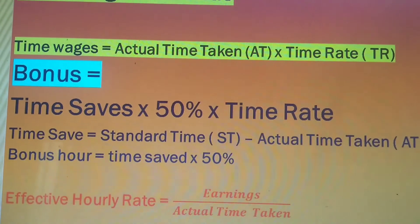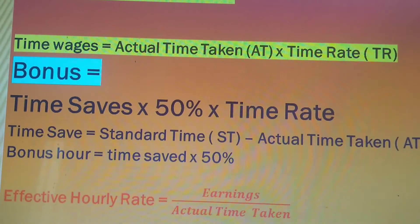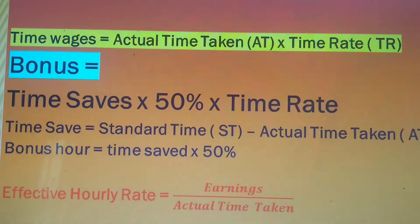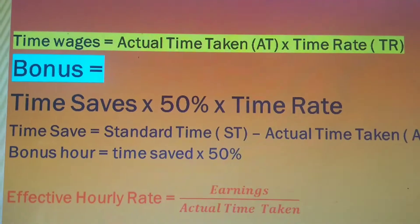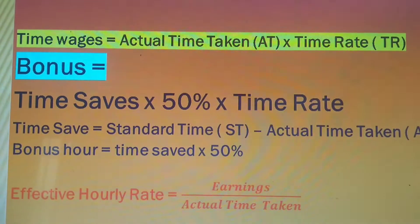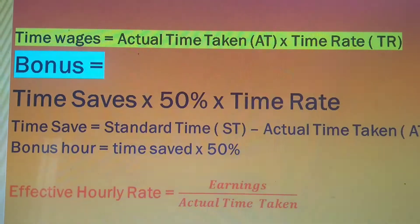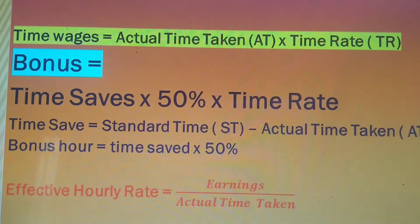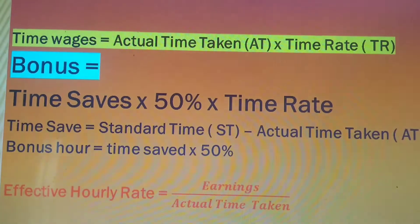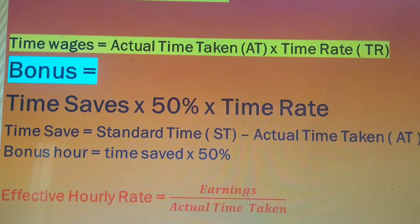The bonus hour for the Halsey Plan is 50% of time saved. You must remember: if your question asks you to calculate bonus hours, that is not in rupees — you calculate only the bonus hours, which is 50% of time saved. If you are asked to calculate the amount of bonus, then you multiply the time rate by the bonus hours.